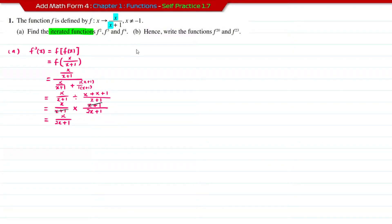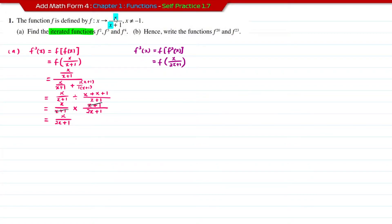Now let's move to f³. This is formed when you insert f² into the function f. f² is what we found in the first part, which is x over 2x+1. This is the one we're going to insert into x in our function f, giving us (x over 2x+1) over (x over 2x+1 plus 1).